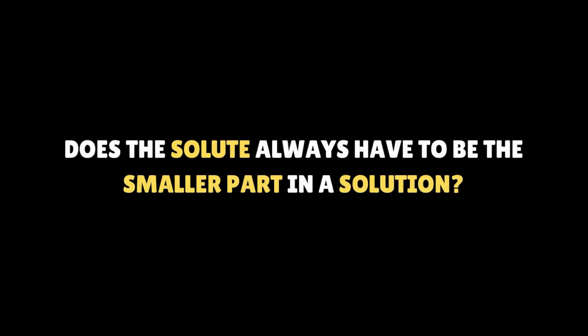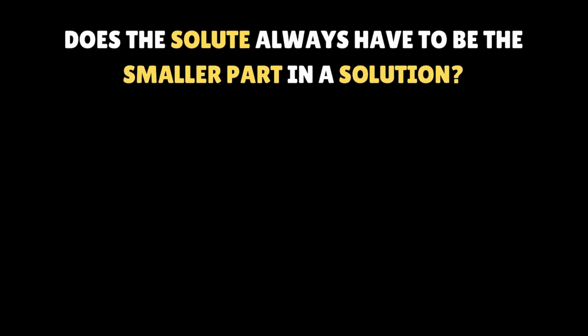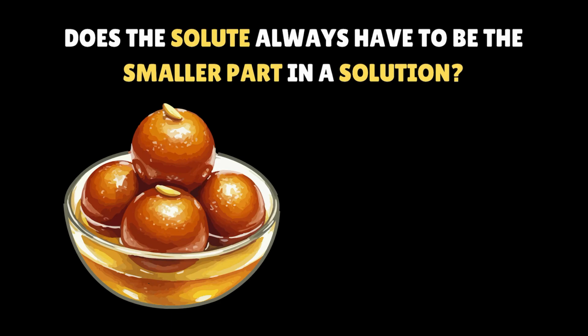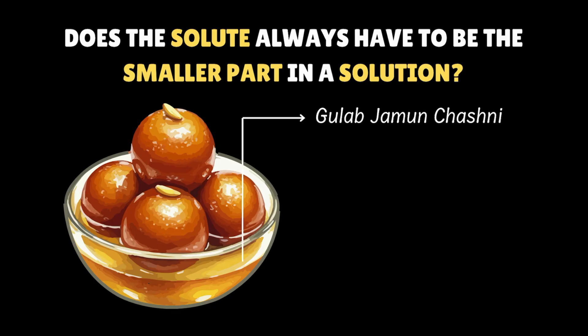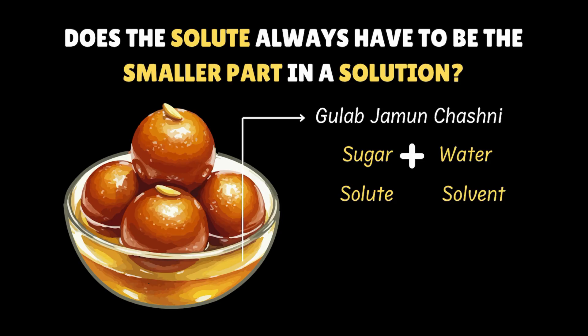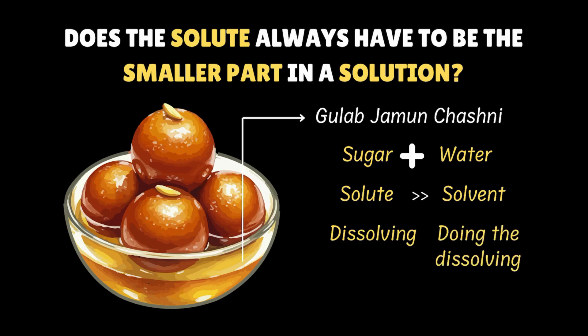But wait — does the solute always have to be the smaller part in the solution? Well, not really. Take the yummy gulab jamun chashni, the sugar syrup that you get with the gulab jamun — it's basically a solution too. Here the sugar is the solute and the water is the solvent, and even though the sugar is present in much larger quantities compared to the water, it's still the solute because the sugar is the one dissolving and the water is the one doing the dissolving.